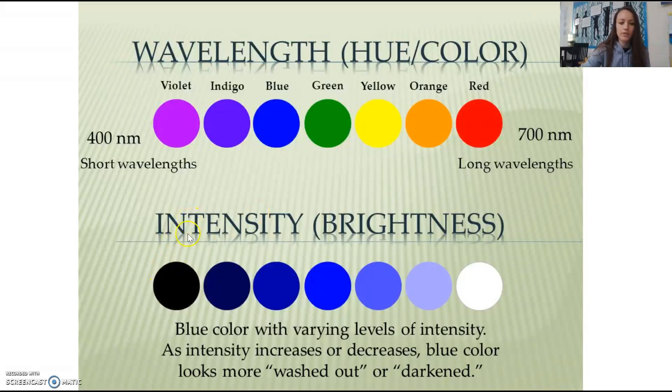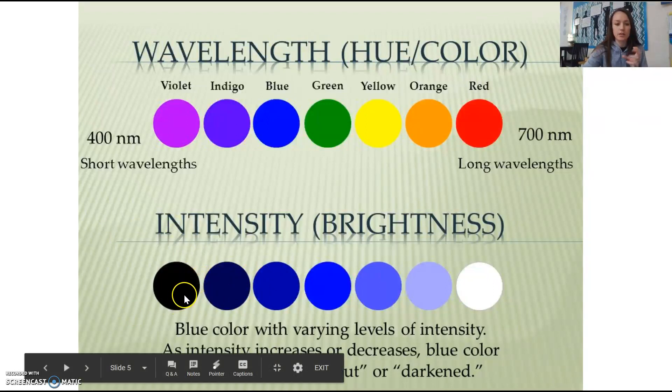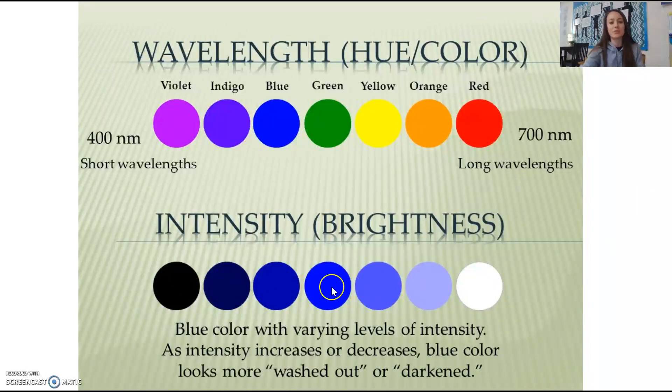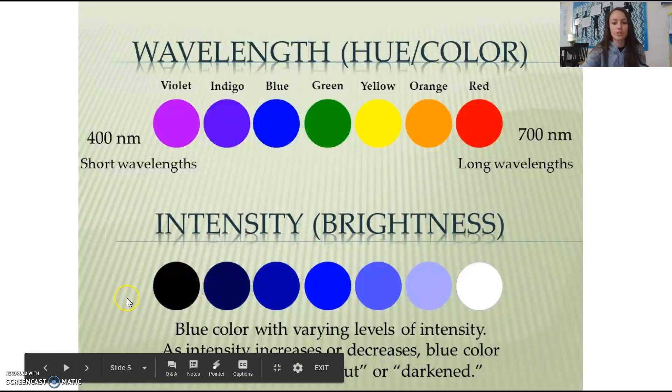And then over here we've got intensity. Intensity is how bright that color that we're seeing is. The darker it is, the deeper the color here. So it's going to go from black to white, and so we're on this blue scale. As you increase intensity it gets brighter and brighter, and as you decrease the intensity it gets darker and darker.